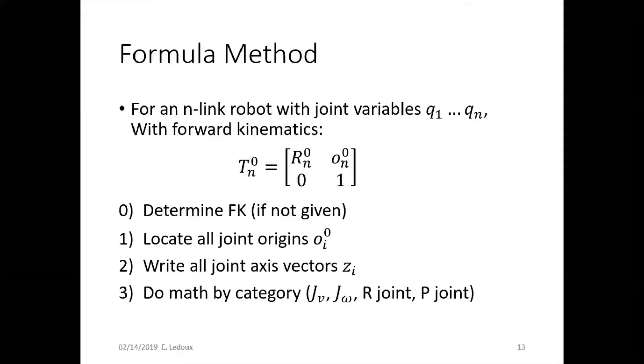This video will cover using the formula method to find the Jacobian for a robot. The formula method is usually used for complicated robots that have more than three joints, but you can use it for any robot.